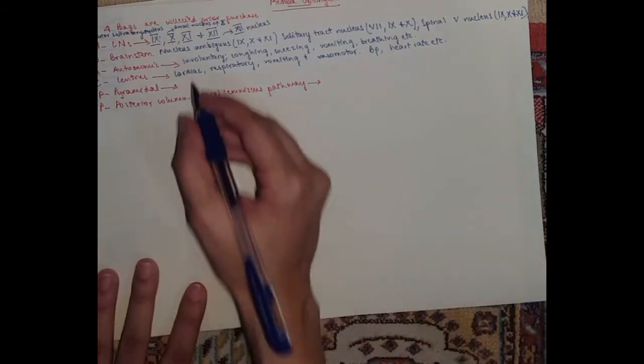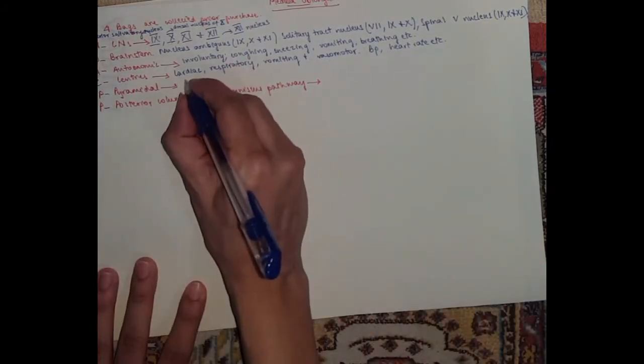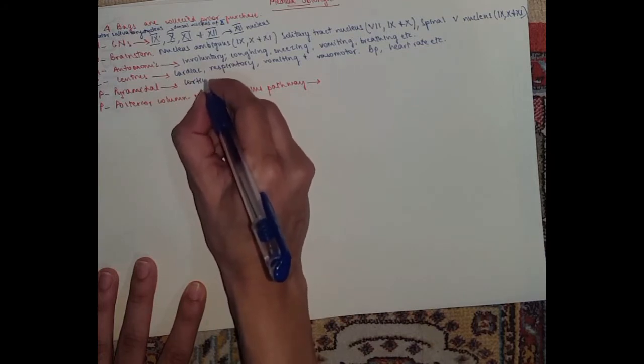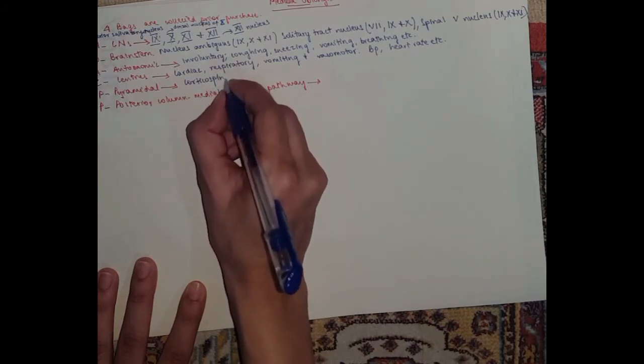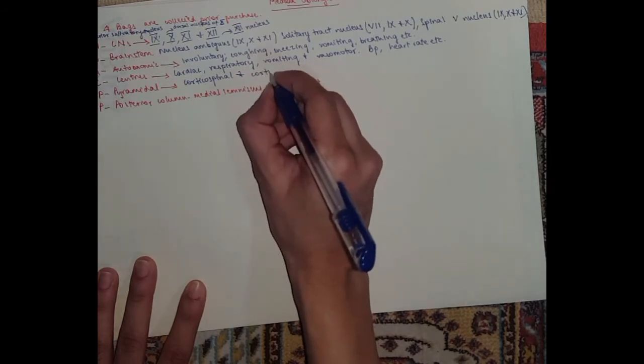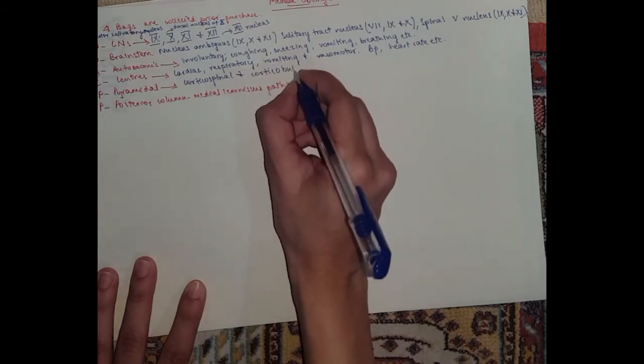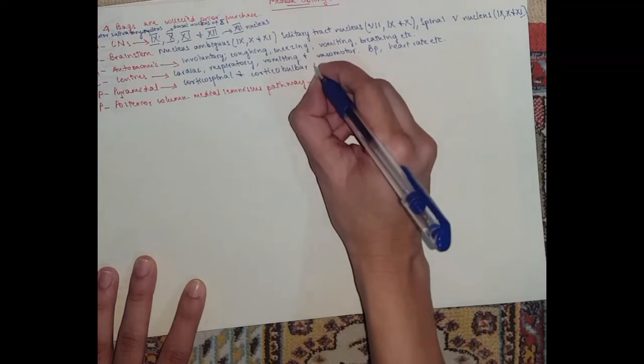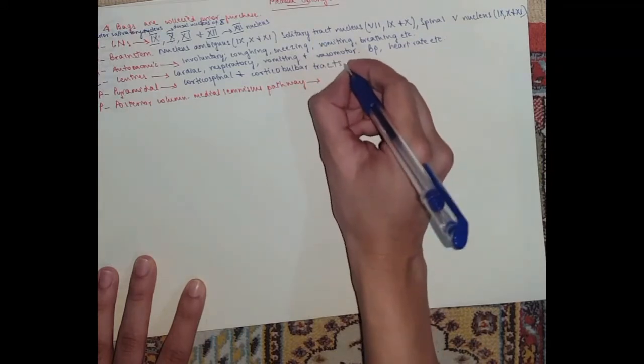Now the two P's are the tracts. So the pyramidal tract is a part of the pyramidal system, and it has two important tracts: the corticospinal and corticobulbar tracts.